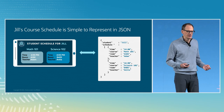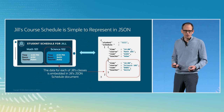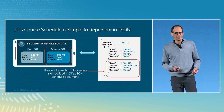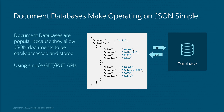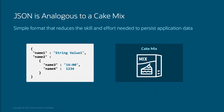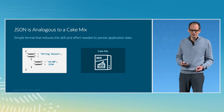In our example, we want to build a system to manage student courses, and all that information can be represented in a single JSON document. For example, the data for each of Jill's courses is embedded in Jill's JSON schedule document. Document databases are very popular because they allow accessing and storing JSON documents with very simple APIs. You do a GET to fetch a document out of the database, display it on your screen, modify it, and send it back. The simplicity of JSON and document databases is analogous to a cake mix — it reduces the skills and effort needed to persist your application data.